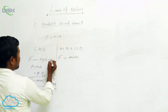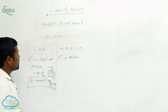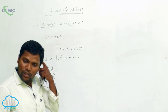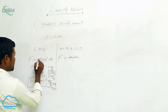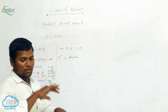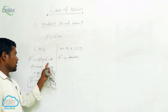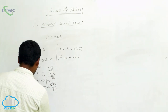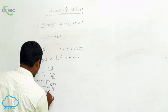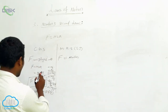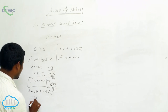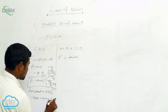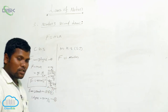If we consider the Newton expression as equation 1 and the CGS derivation as equation 2, comparing both — force is on both sides. The force in MKS is Newton and in CGS it is Dyne. So 1 Dyne equals gram × centimeter per second squared. This is equation 3.